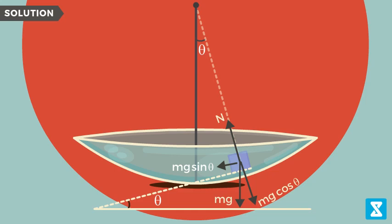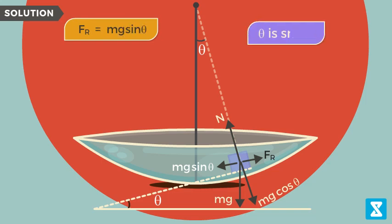Let us assume the restoring force is denoted by F_R. So the restoring force is being applied by the component of gravity along the surface, that is mg sine theta. Since the oscillations are small, theta is small. For small theta we know that sine theta is approximately equal to theta.